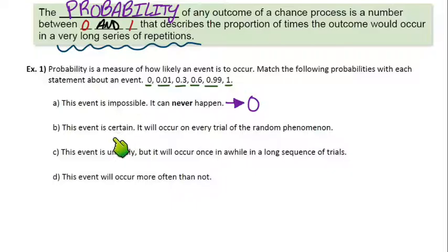Part B, this event is certain. It will occur on every trial of the random phenomenon. You know for sure it's going to happen. If it's absolutely going to occur every single time, that would be a probability of 1. So, we just covered the two extremes. Absolutely won't happen is 0. Absolutely will happen, that's 1.